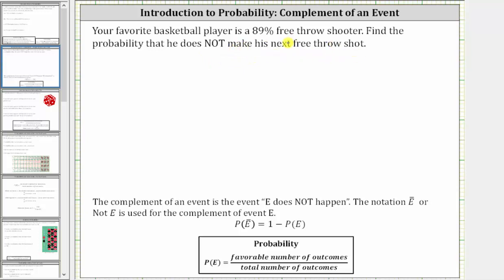Because the player is an 89% free throw shooter, the probability he will make the next free throw is 89%. Let's record this as the probability of a make is equal to 89%.